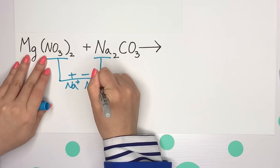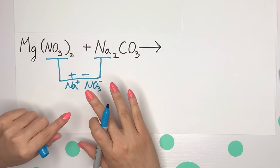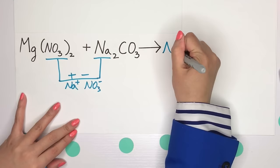Once again, I'm not bringing down that 2 subscript. Looking back at our compound that forms or our product that forms, it's completely balanced of charges, so we will get our first product of sodium nitrate.